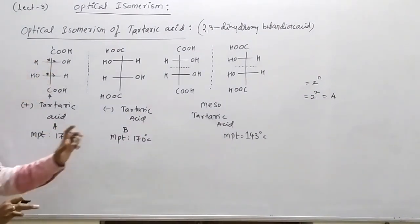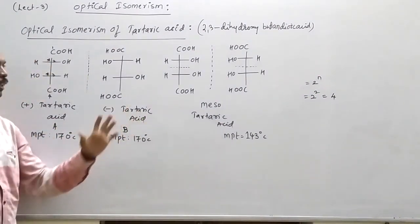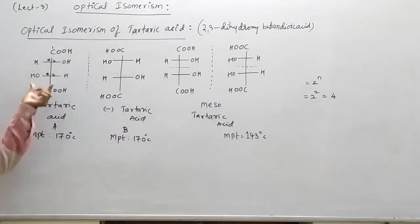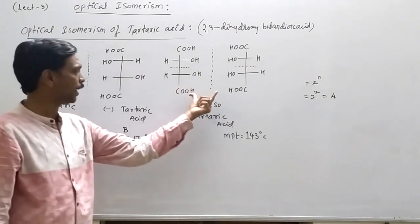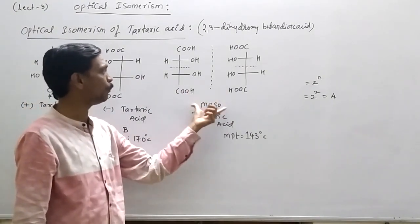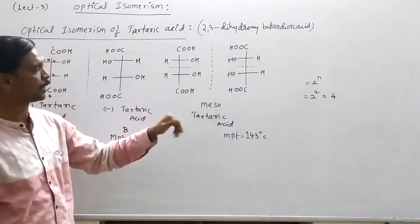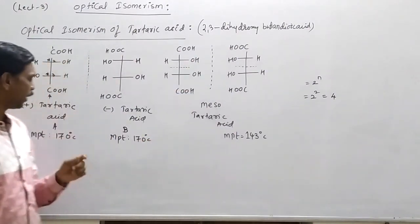Which are optically active and optically inactive, we have to see. So first of all, tartaric acid positive, it means this rotates plane polarized light towards the right side. Its mirror image will be minus, and the third and fourth will be meso compounds. Let's discuss this.